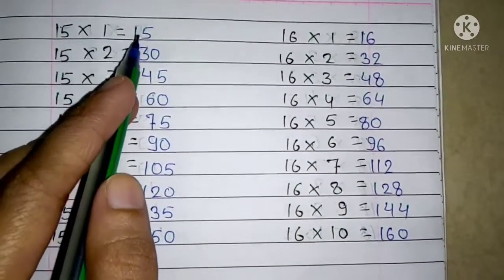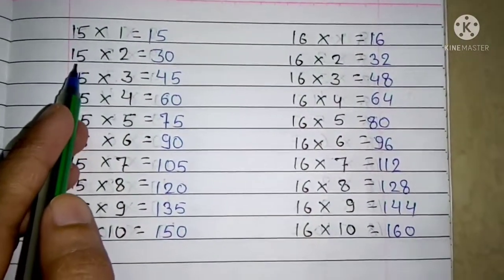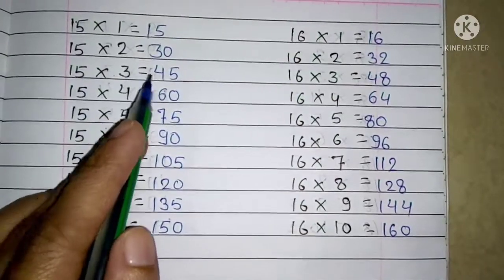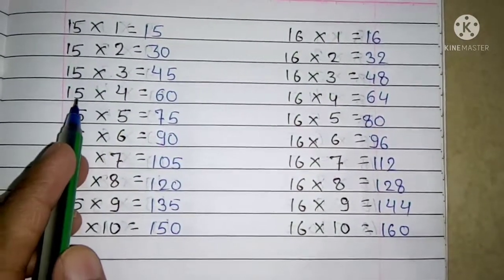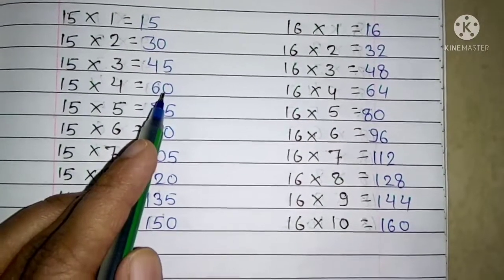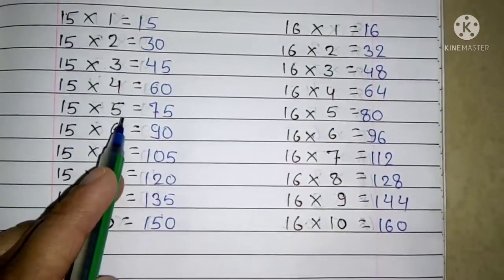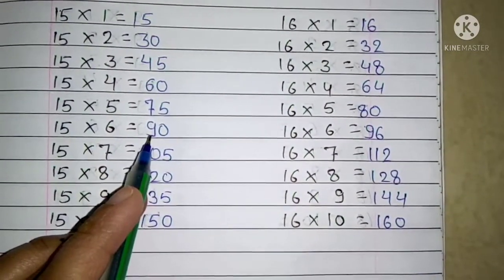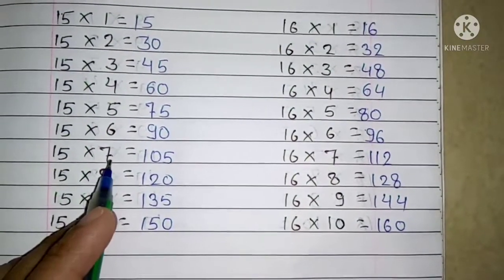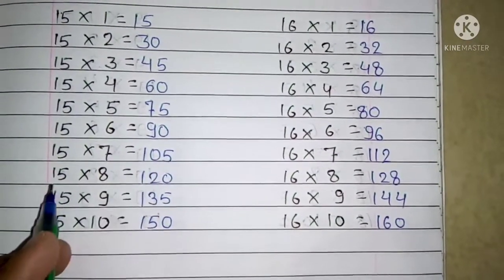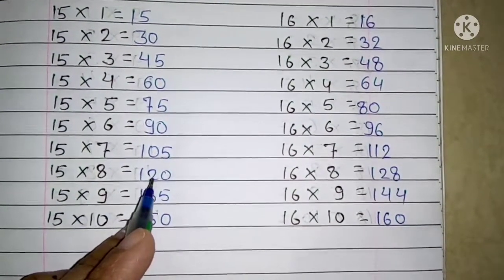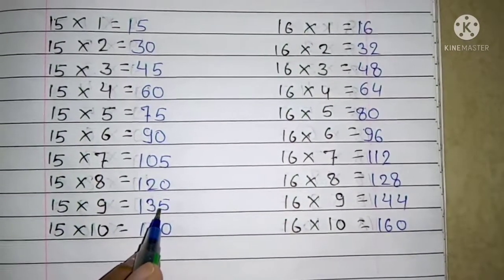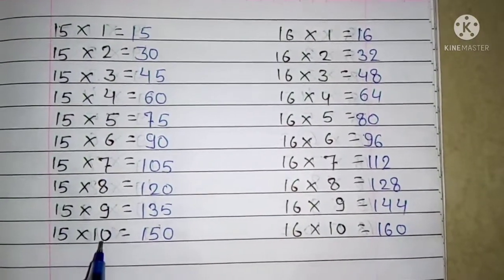Next table 15: 15 ones are 15, 15 twos are 30, 15 threes are 45, 15 fours are 60, 15 fives are 75, 15 sixes are 90, 15 sevens are 105, 15 eights are 120, 15 nines are 135, 15 tens are 150.